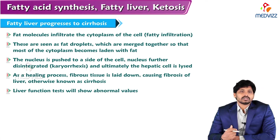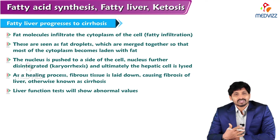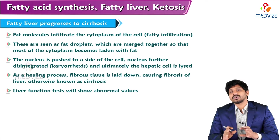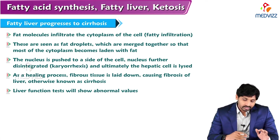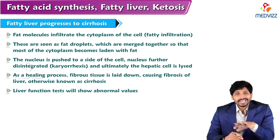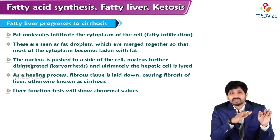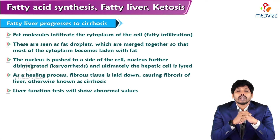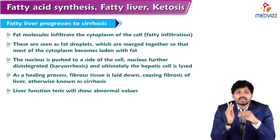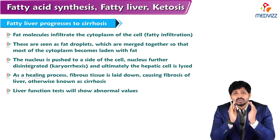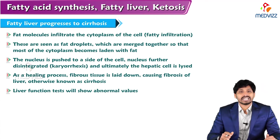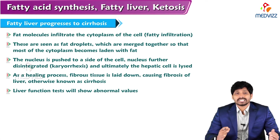How does fatty liver lead to cirrhosis? Fat molecules infiltrate the cytoplasm of liver cells and are seen as fat droplets which merge together, so most of the cytoplasm becomes laden with fat. The nucleus is pushed aside to the edge of the cell, further disintegrates, and ultimately the hepatic cell dies. As a healing process, fibrous tissue is laid down, causing fibrosis of the liver otherwise known as cirrhosis. Liver function tests will show abnormal values of lipids.